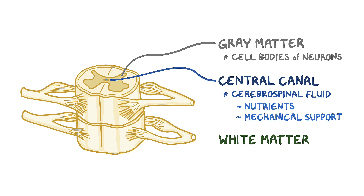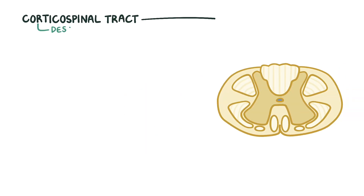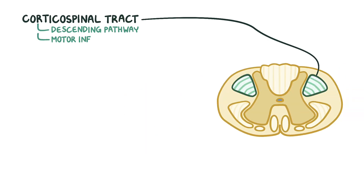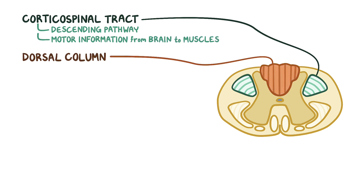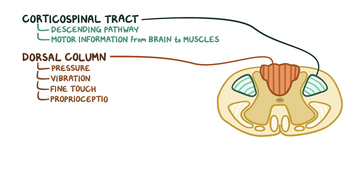Surrounding the gray matter is white matter, which consists of the axons of various neurons. The spinal cord has different neural tracts that carry sensory information to and from the brain. The corticospinal tract is a descending pathway which carries motor information from the brain to various muscles. The dorsal column, found in the posterior portion of the spinal cord, is responsible for sending pressure, vibration, fine touch, and proprioception, or the awareness of one's body in space.